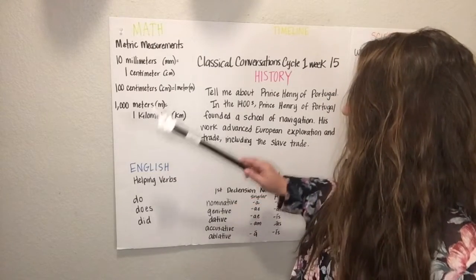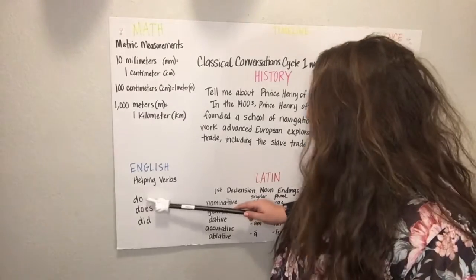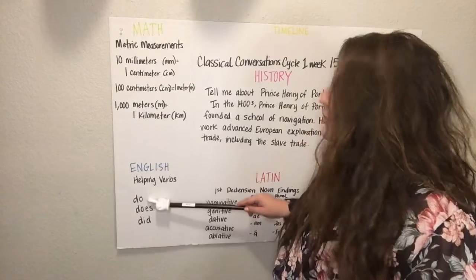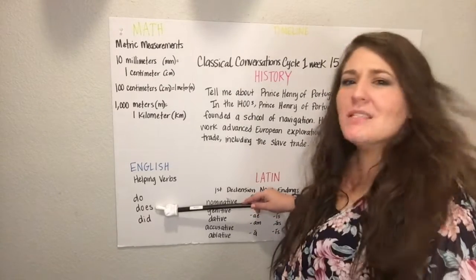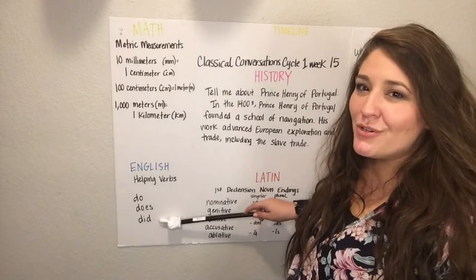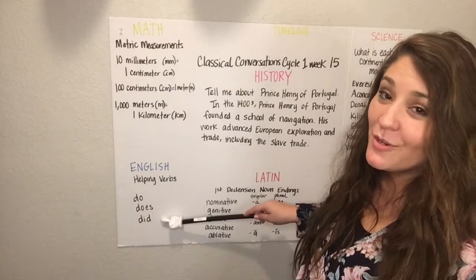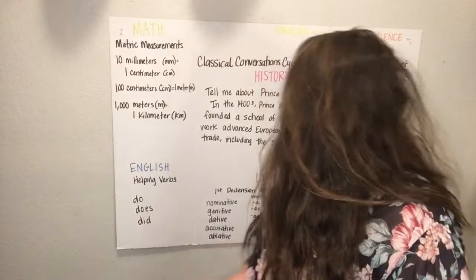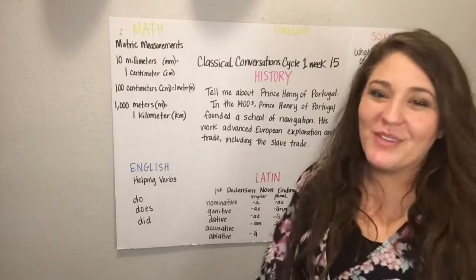Helping verbs: do, does, did. For example: Do you want to go to school tomorrow? Do you want to go to the playscape? Does the car work? Did you do your homework? Did you ask for a piece of candy? Those are how these words work. And that was English — helping verbs: do, does, did.